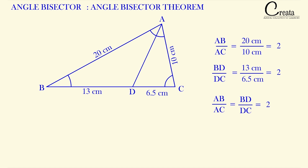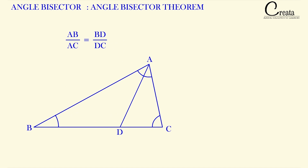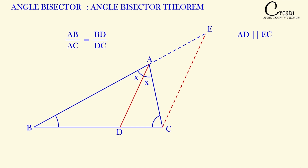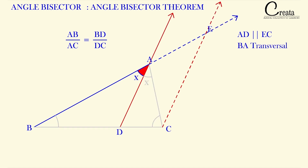Now let's do a small proof of this property. Consider triangle ABC with AD as the angle bisector. AD divides angle A into two equal parts; let both angles equal x. Extend line BA and draw a line segment from vertex C parallel to AD — these two lines meet at point E. Since AD and EC are parallel with AE as a transversal, angle x equals angle AEC because these are corresponding angles and corresponding angles are equal when a transversal cuts parallel lines.